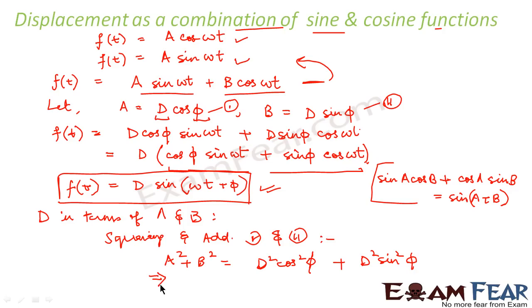Now, we know that sin² θ plus cos² θ is equal to 1. So, using that, we can say A² + B² is equal to D². Right? So, from this, we can say that from here, we get D is equal to √(A² + B²). So, we have successfully expressed D in terms of A and B.